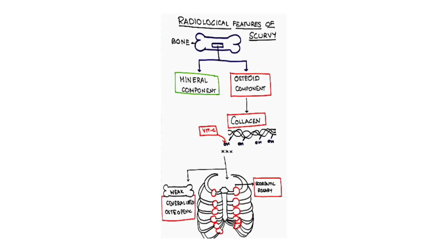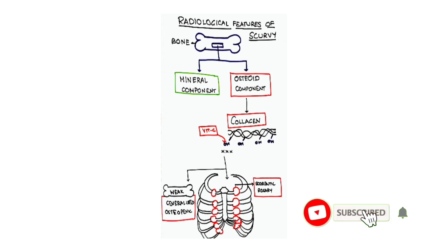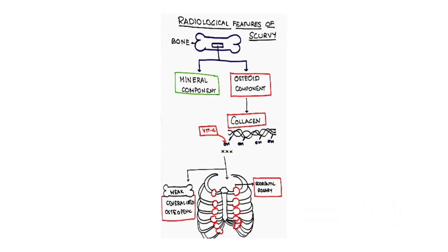There are two components: the osteoid component and the mineral component. In the osteoid component, the major protein is collagen. To form its triple helical structure, hydroxylation of proline and lysine is needed, which is dependent on vitamin C. In scurvy, there is less vitamin C, so there is defective collagen, and therefore weak bone.